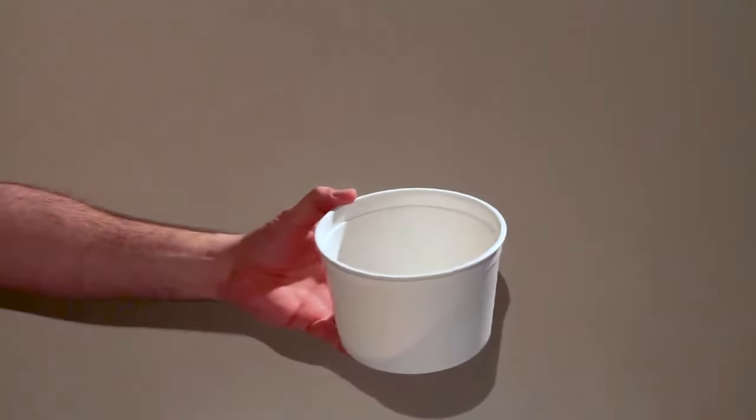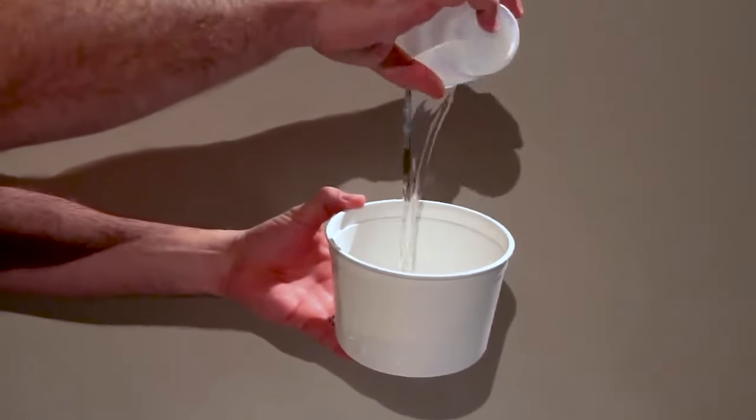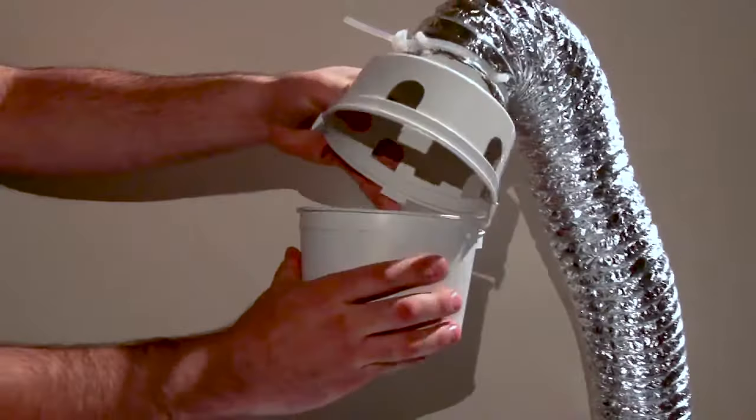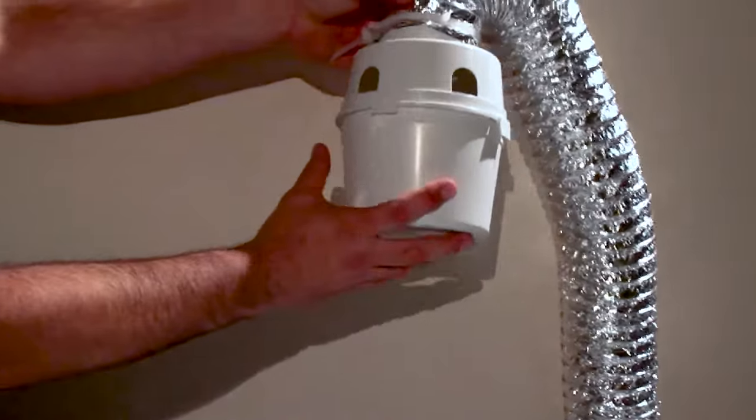Now that you've attached the indoor dryer vent kit to your dryer, half fill the bottom of the reservoir with water, then snap on the cover. The water's function is to catch the lint.